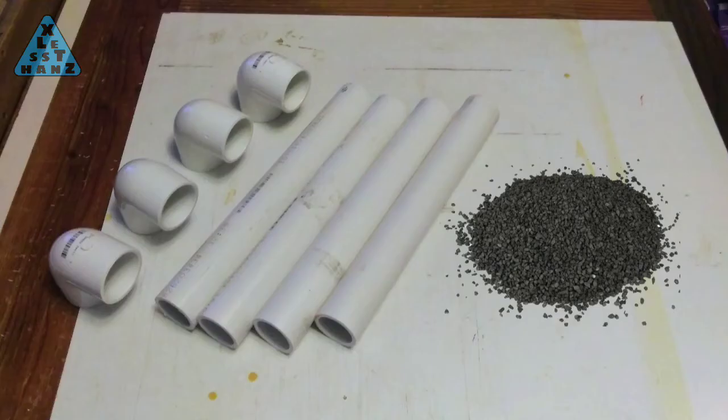I'm going to build the base of the lighting unit, working on this project from the bottom up. The parts needed for the base are four one-foot-long PVC pipes, four elbows, and some crushed rocks.